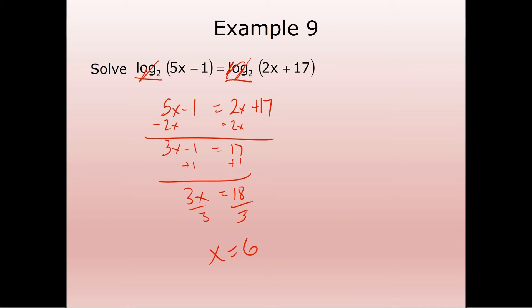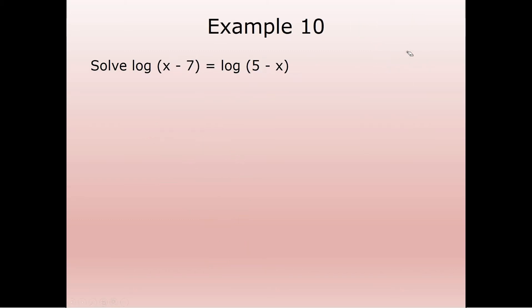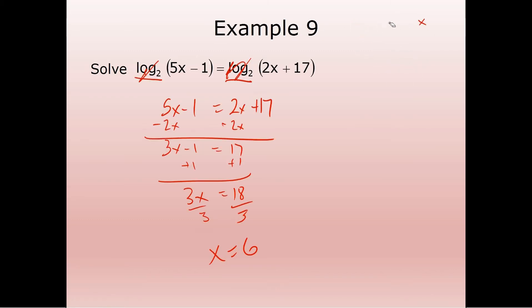Now, one thing we didn't have to do before but we do have to do now is check our answer, because we can't take the log of a negative number. Log base two of negative two would mean two to the X equals negative two — there's no way to raise a positive number to an exponent and get a negative. So we cannot have a negative argument. Plugging six in: 30 minus one equals 29, fine. 12 plus 17 equals 29, fine.